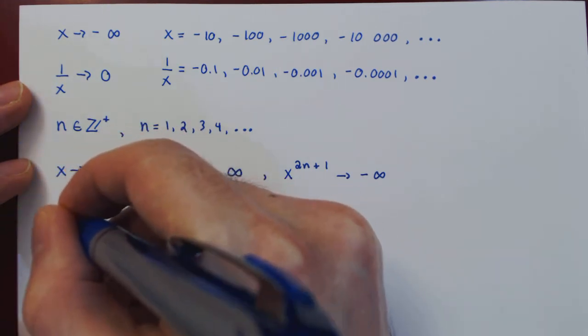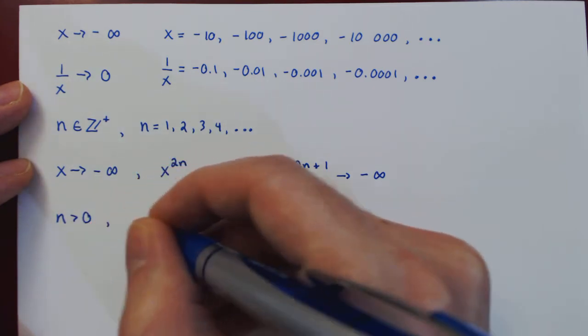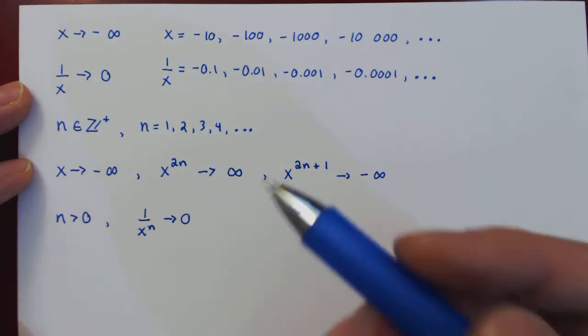Either case, the reciprocal, so now we go back to n being any positive number, the reciprocal 1 over x to the n will be approaching 0.